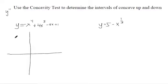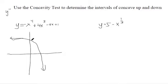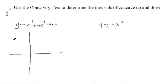Let's do another graph. This graph is decreasing, and the slopes are getting smaller and smaller — so this is like a negative 1 slope, negative 2, negative 4. The slopes are getting smaller and smaller, so this is concave down.